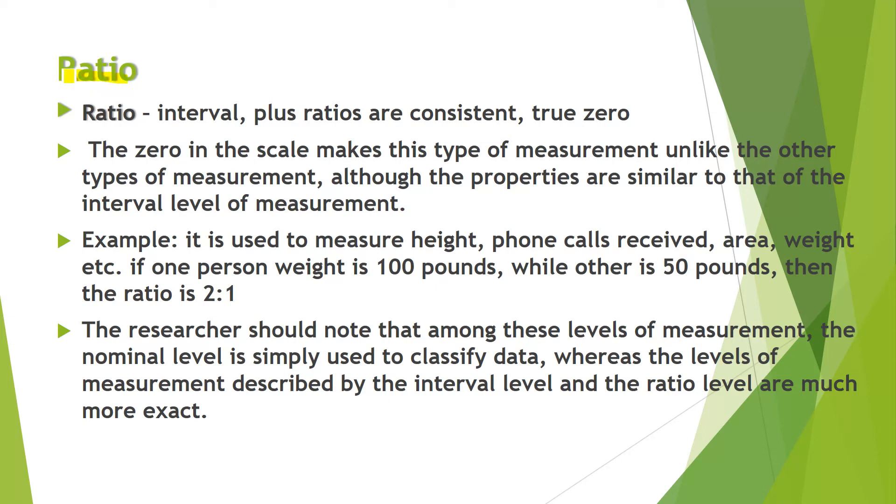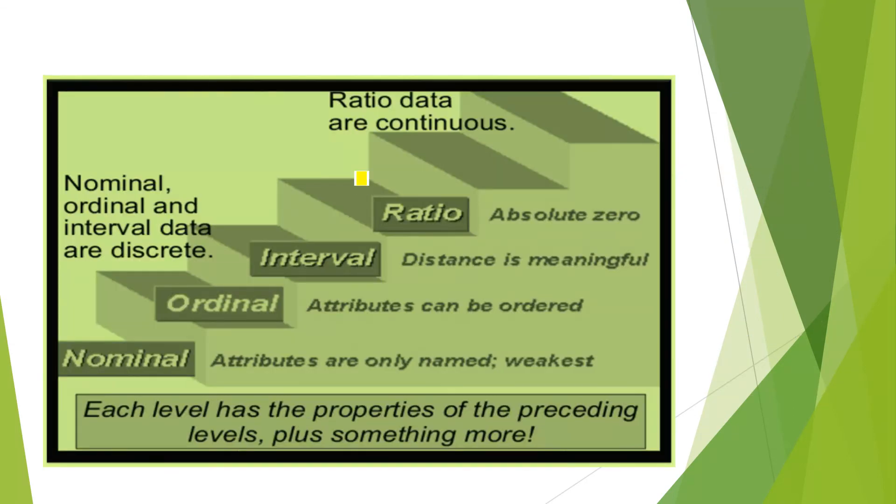While on the other hand, in ratio and this is the last measurement. There is true zero. The zero is the scale makes this type of measurement. Unlike the other types of measurement. Although the properties are similar to that of the interval level of measurement. Here is an example. It is used to measure height. Phone calls received. Area. Weight. If we measure height, phone calls, then you have to use the ratio measurement. If someone has weight is 100 pounds. While other is 50 pounds. We can say the ratio is 2 is to 1. The researcher should note that among these levels of measurement, the nominal, the first one, is simple. Used to classify data. Whereas the levels of measurement described by the interval level and the ratio level are much more exact.